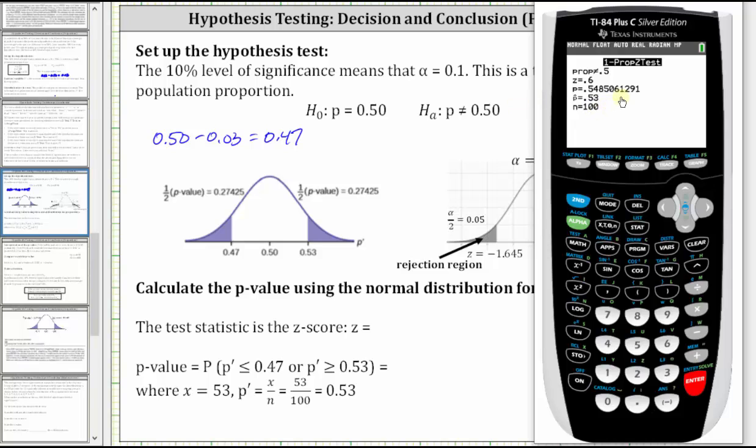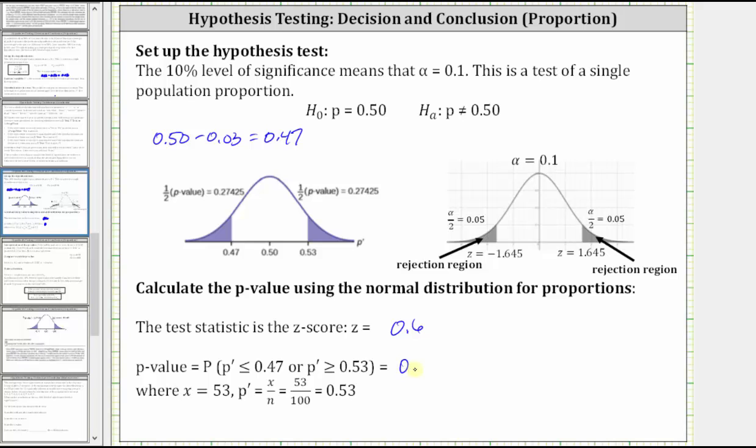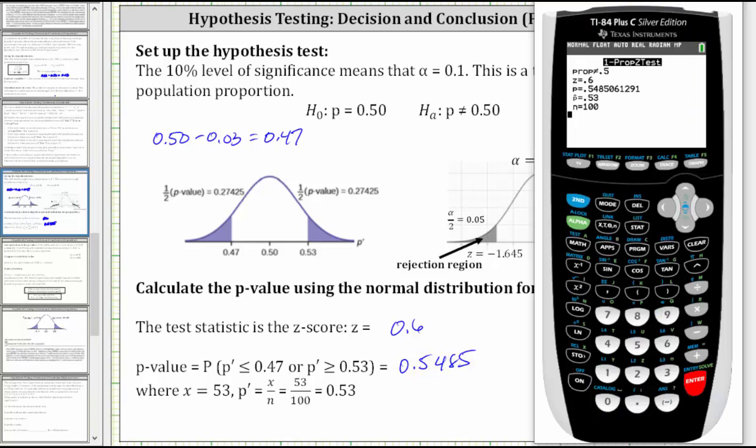Let's go ahead and record this. And now let's go back to the calculator. Let's run the test again and select draw. So stat, right arrow to test, option five. Everything stays the same, except now we go down to draw. Press enter. Notice how this gives us a graph that resembles our graph here on the left. And below we do have the z-score as well as the P value.